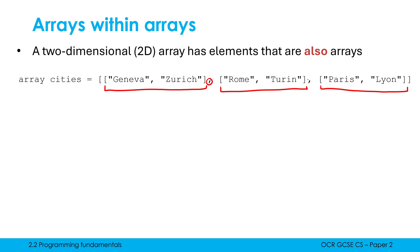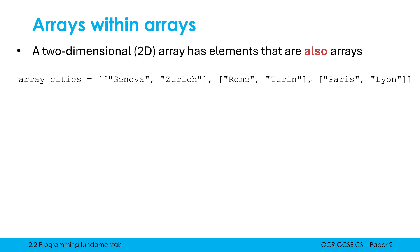I've got commas separating these because they are elements within the wider array. So cities is a 2D array; Geneva and Zurich is a 1D array, Rome and Turin a 1D array, Paris and Lyon a 1D array - they are inside a 2D array. That is the core concept. If I do cities.length, this gives us 3, because cities has 3 elements. .length gives us how many elements an array has, and they just happen to be arrays.